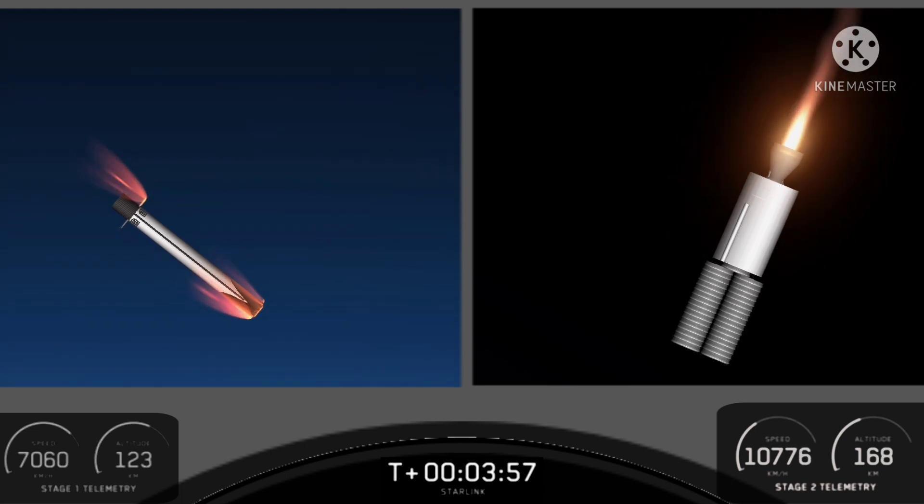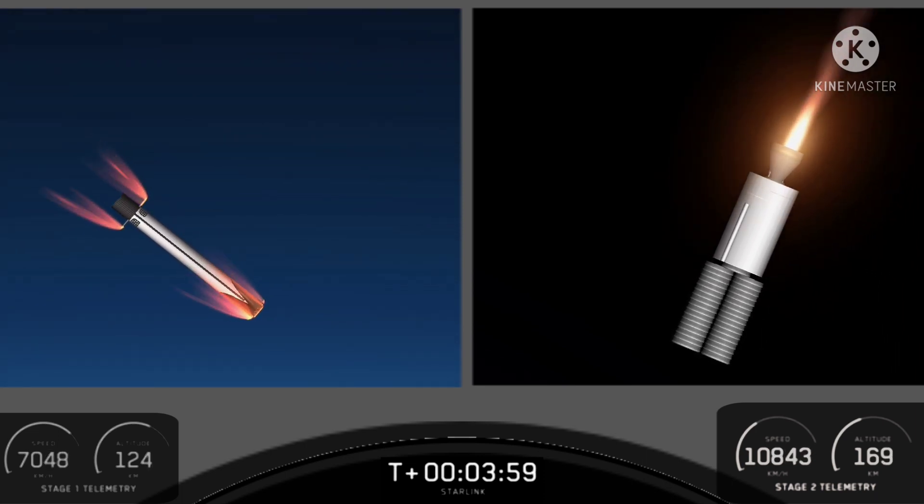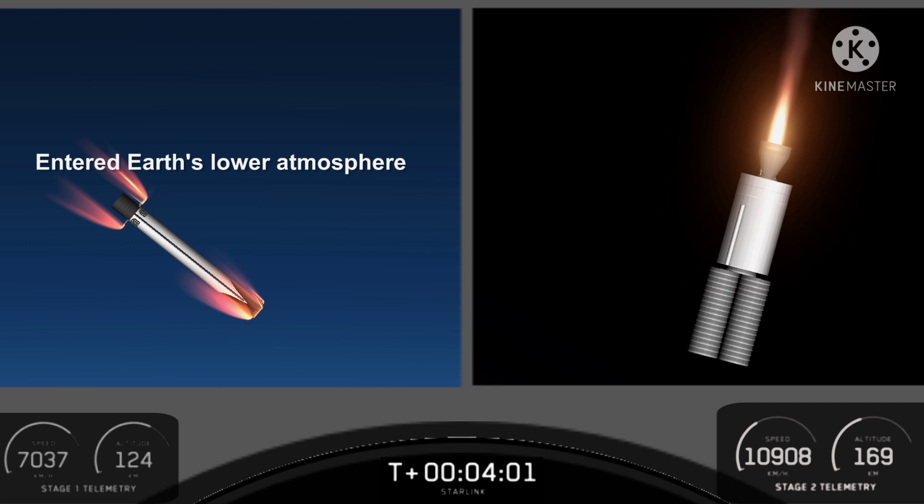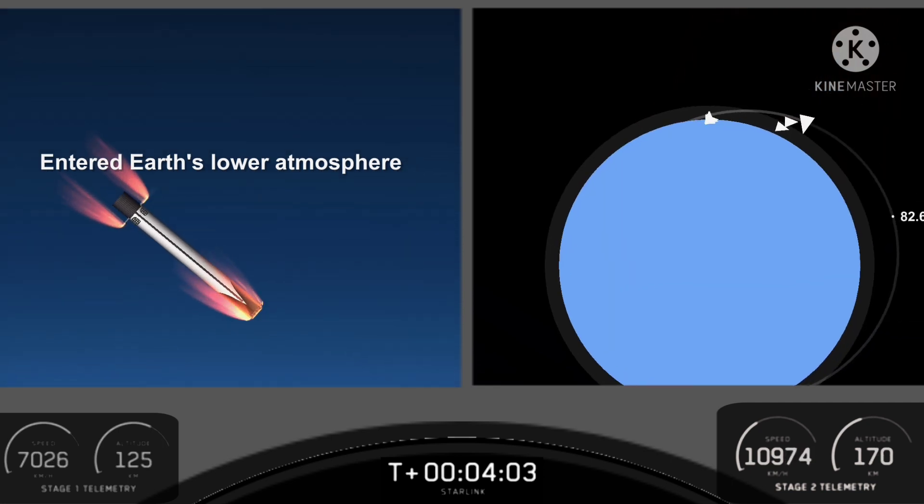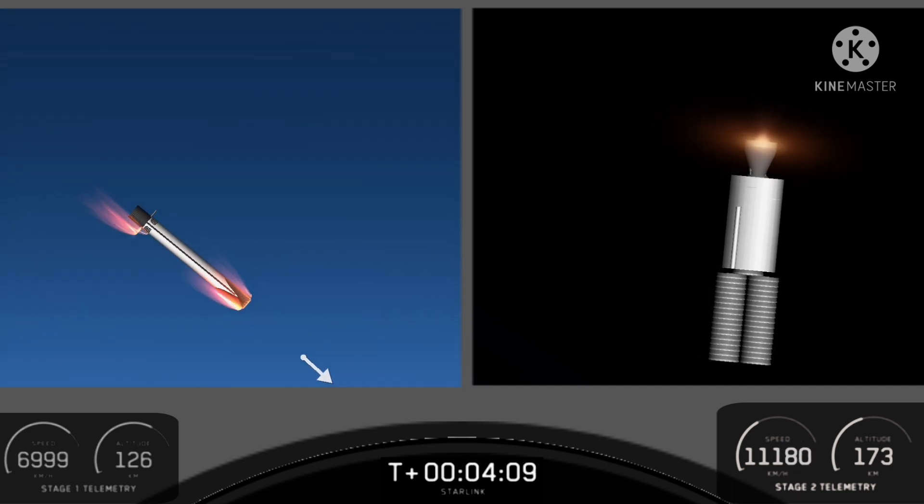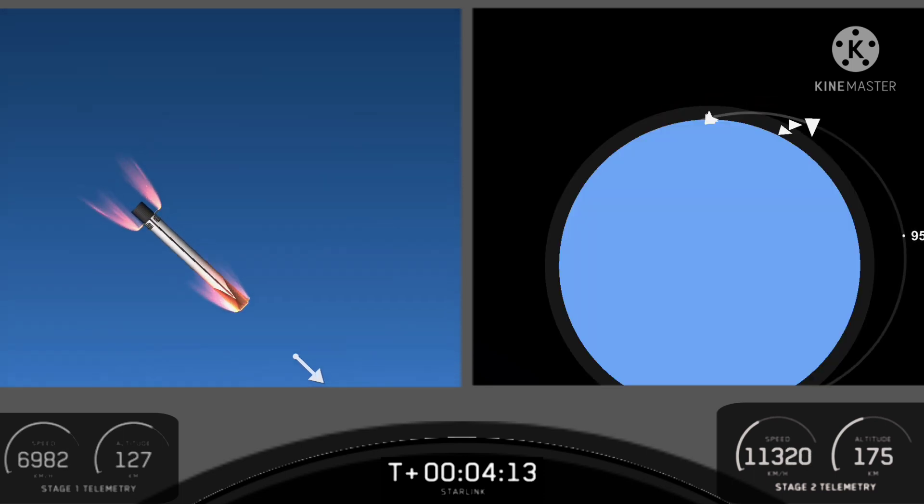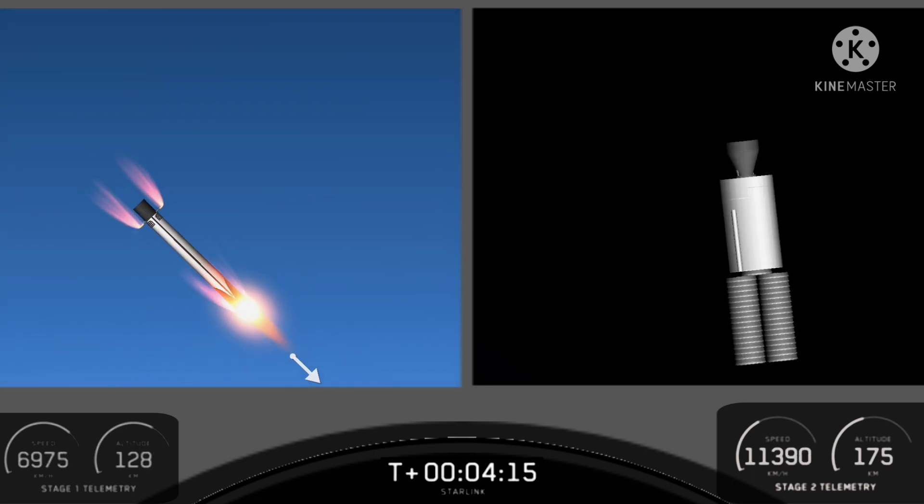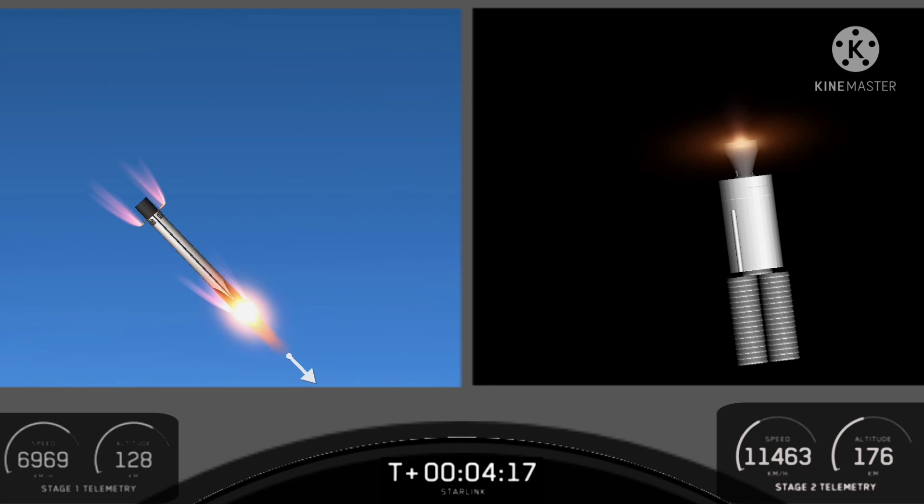Again, these are live views. In order for the first stage to make its way back to our drone ship, it needs to execute two burns. The first is an entry burn where three of the engines on the first stage will reignite, and this will help to slow down the stage as it re-enters the upper parts of the atmosphere. The second burn from the first stage is the landing burn. This is a single engine burn that will bring the vehicle speed down rapidly in order to land on our drone ship.